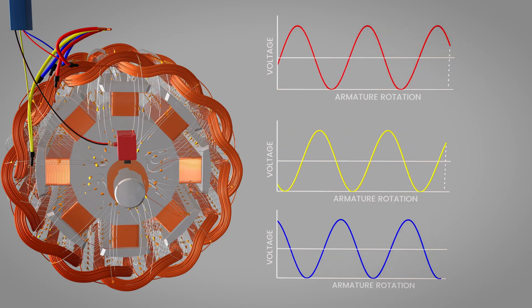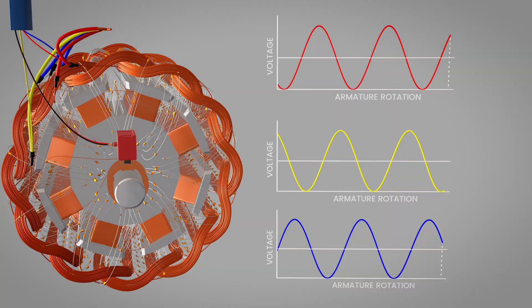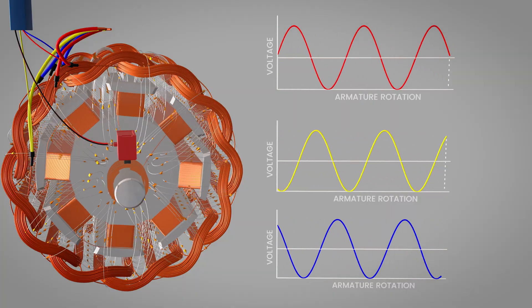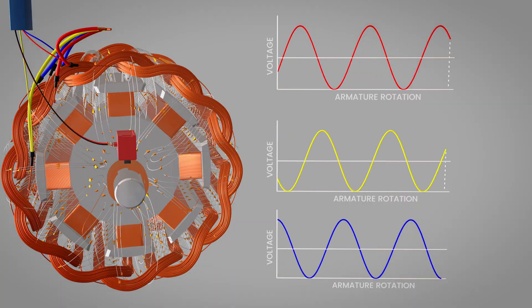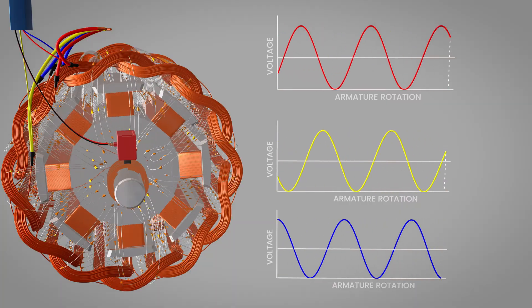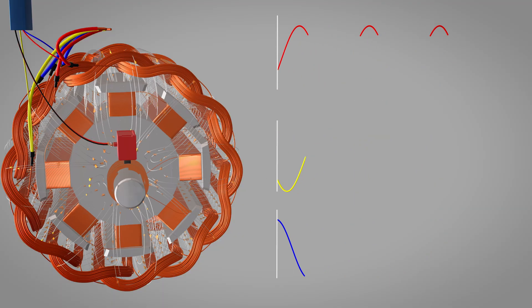If residual magnetism is lost due to prolonged inactivity, demagnetizing influences, or component replacement, the alternator may fail to build up voltage. In such cases, a short burst of external DC excitation is applied to restore residual flux and enable normal self-excitation.